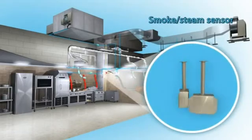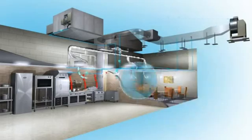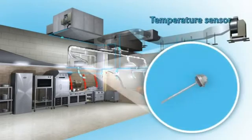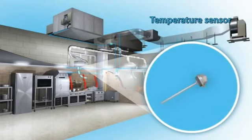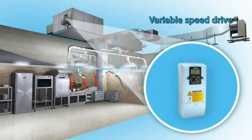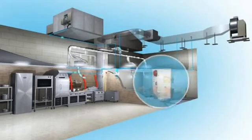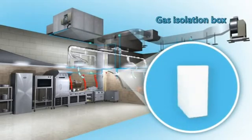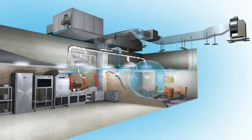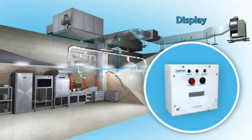The smoke and steam sensor detects smoke and steam across the hood. The temperature sensor measures the temperature in the duct. The variable speed drive controls the extract and supply fan motor speed. The gas isolation unit is the interface of the gas isolation system. The display is the interface of the Cheetah system.